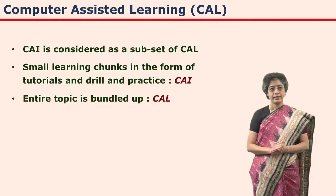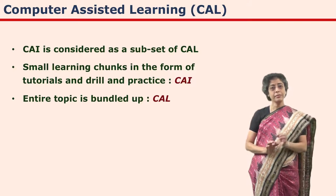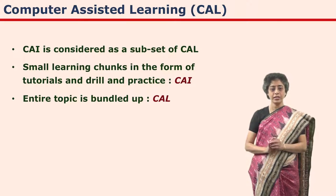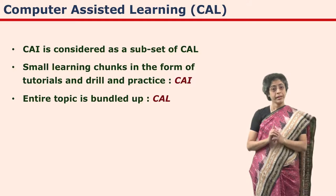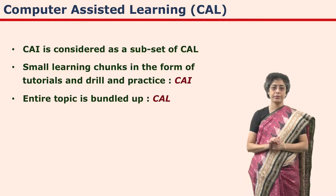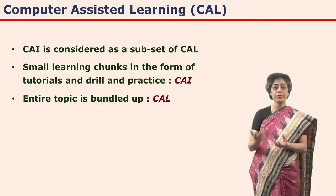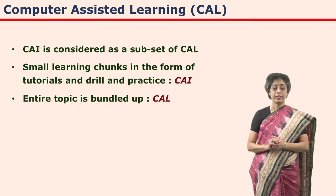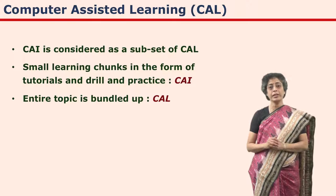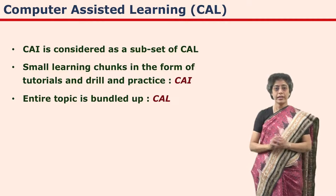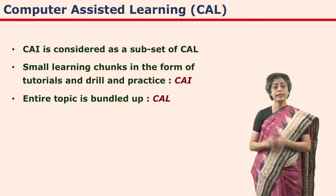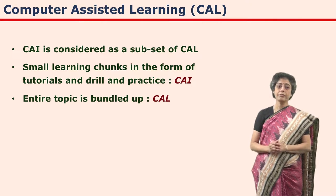What is CAL? CAL stands for computer assisted learning. The terms CI and CAL are often used as synonyms, but some experts differentiate between them. CI is considered a subset of CAL by many experts. They say that when there are small learning chunks in the form of tutorial or drill and practice, we use the term CI. When there are many CI packages bundled together covering an entire topic and simulations are also included, then we use the term CAL — computer assisted learning.